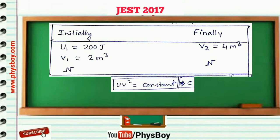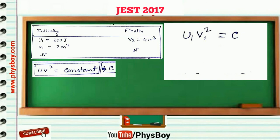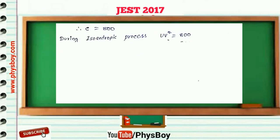Let the constant be C, so U₁V₁² = C. Substituting U₁ = 200 J and V₁ = 2 m³, we get C = 200 × 4 = 800. So the relation during this isentropic process is UV² = 800, which means U can be written as 800/V².